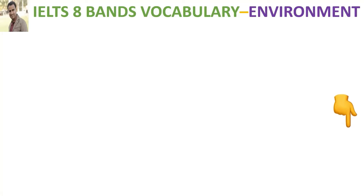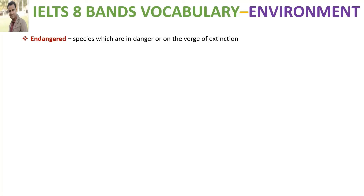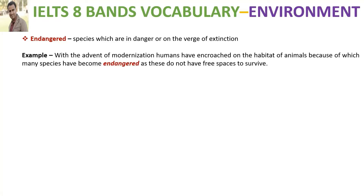Let's get started. The first word of the day is 'endangered'. Endangered is used for those species which are in danger and are on the verge of extinction, like tigers worldwide. For example: humans have encroached on the natural habitats of animals, because of which many species have become endangered as they do not have free spaces to survive.